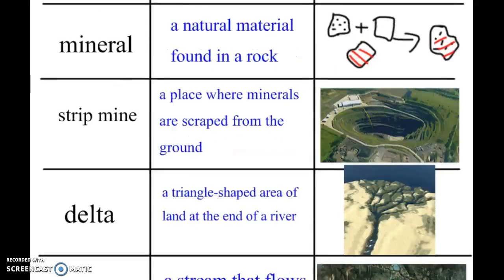The next words that you need include minerals — a natural material found in a rock. My picture shows three different minerals that when combined create a certain rock. You might think about what you did in science class, right, in one of your last readers.